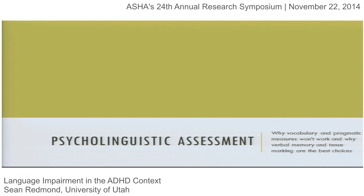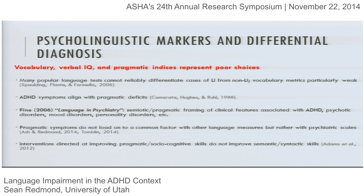I've suggested we use parent rating scales when looking at the co-occurrence rate between ADHD and language impairment. Now I'll move towards considering available language measures for looking at language abilities in kids with ADHD. I'm going to suggest off the bat that we avoid vocabulary, things called verbal IQ, and pragmatic indices, because these have problems in addressing this question.